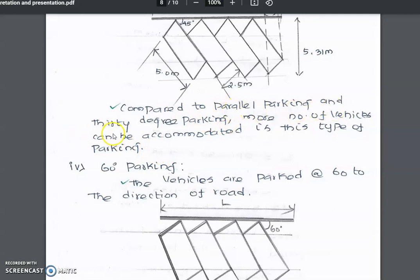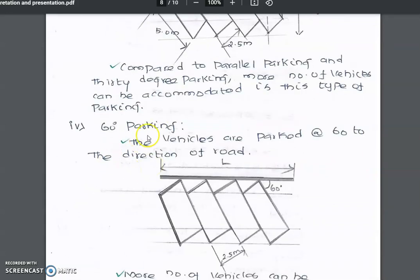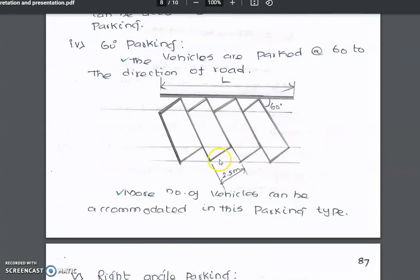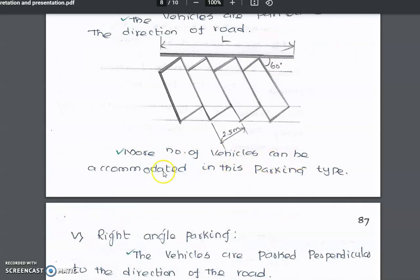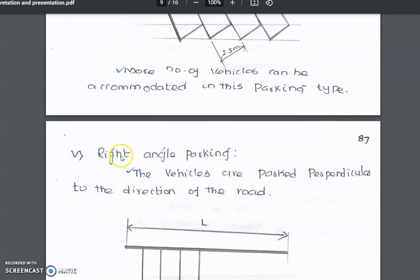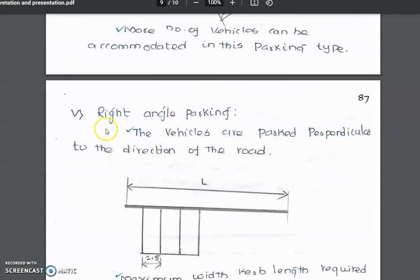In 60-degree parking, vehicles are parked at 60 degrees to the direction of the road. More vehicles can be accommodated in this parking type. Next is right-angle parking.